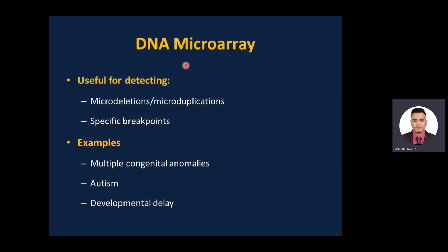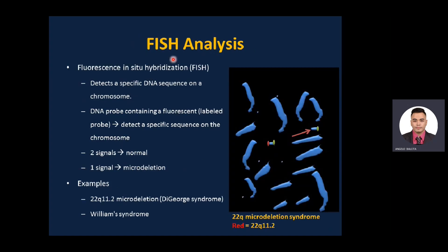DNA microarray is able to measure the level of gene expression of all genes within a cell. It is useful for detecting microdeletions, microduplications, and specific breakpoints that cannot be detected with regular karyotype. Indications for using DNA microarray include multiple congenital anomalies, autism, and developmental delay.